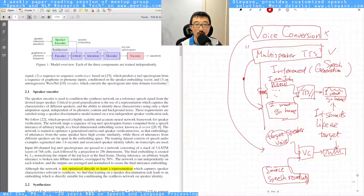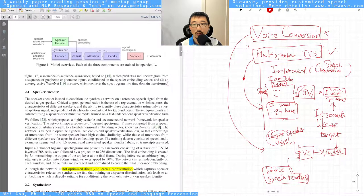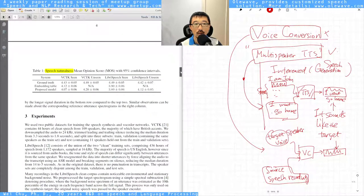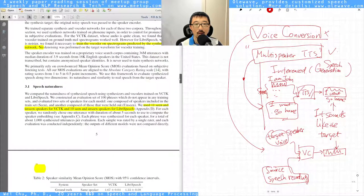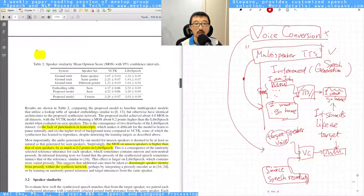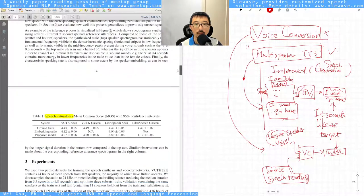The results, I would say, are fairly good. The MOS score of speech naturalness for the proposed model, especially for the unseen case, is roughly as good as the ground truth in terms of the VCTK test set. Even for the LibreSpeech dataset which has noise, the result is still very good compared to the unseen case.